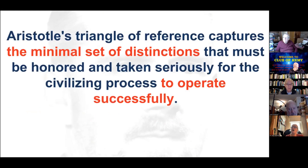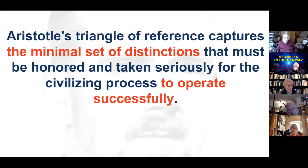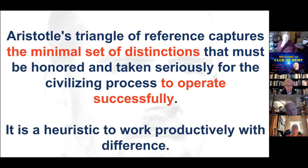As I see them, the triangles highlight the minimal set of necessary distinctions to make the civilizing process move forward successfully. It's a minimal set — much more is needed — but if you ignore any of these distinctions you are guaranteed miscommunications, misperceptions, and all sorts of misunderstandings. I look at it as a heuristic.